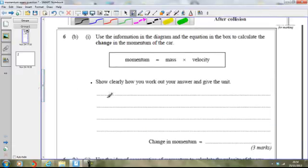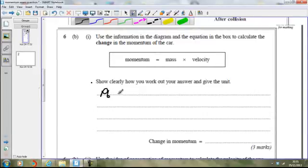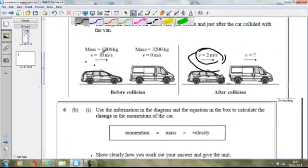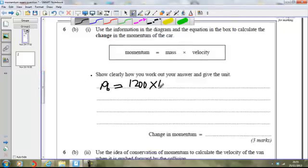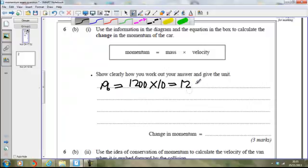So the momentum before the collision. The car, Pb, equals the mass times the velocity. The mass is 1200 kilograms. Its velocity is 10 meters per second. So 1200 times the 10 meters per second gives us 12,000 kilogram meters per second.